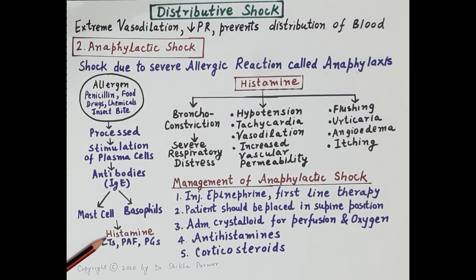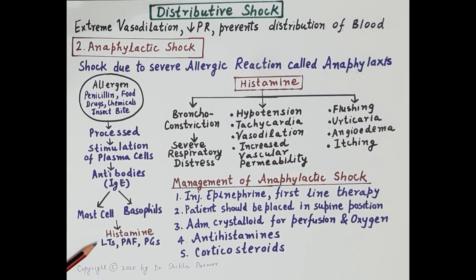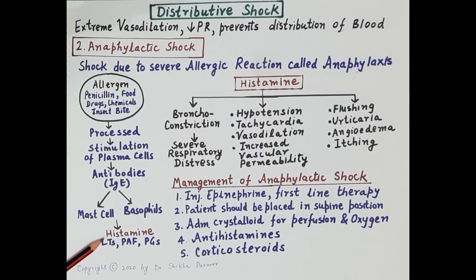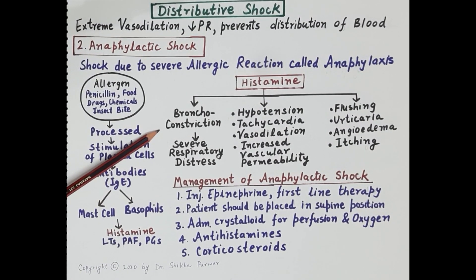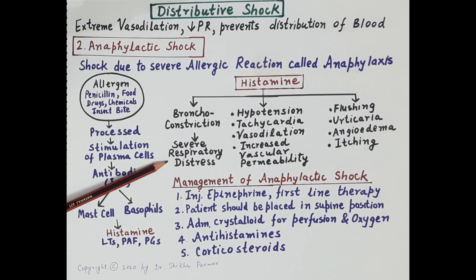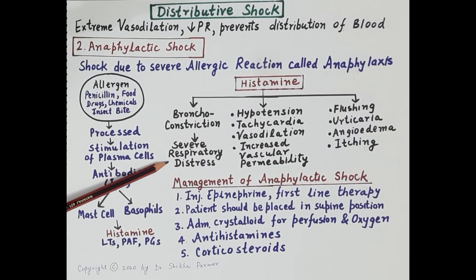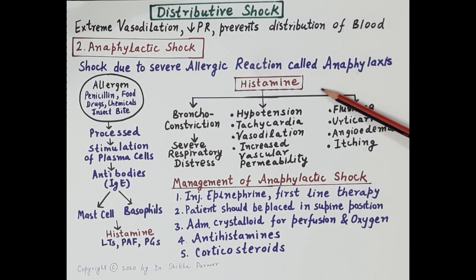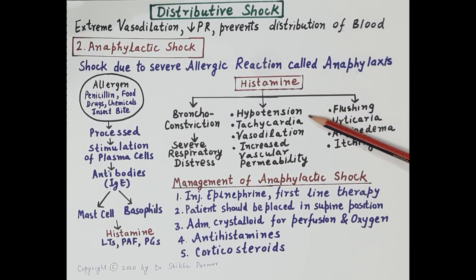Apart from histamine, other inflammatory mediators are released — including leukotrienes, platelet activating factors, and prostaglandins. Histamine is the prime inflammatory mediator responsible for anaphylaxis. It produces severe bronchoconstriction; because of the constriction of bronchi the person is unable to breathe, resulting in severe respiratory distress. The patient should therefore be immediately supplied with oxygen via face mask.